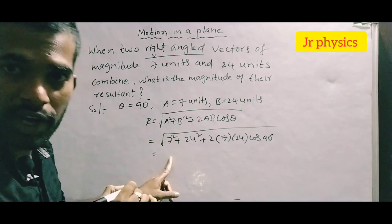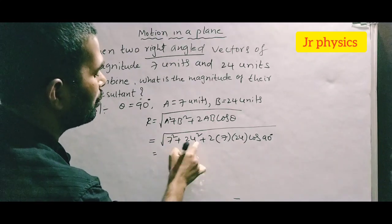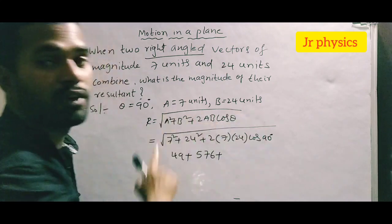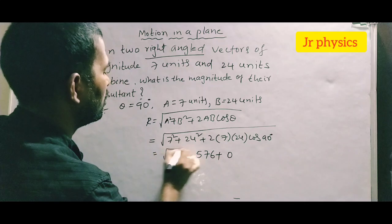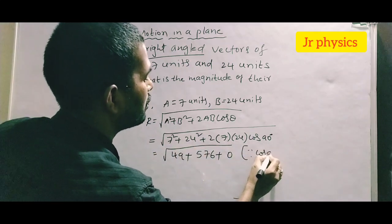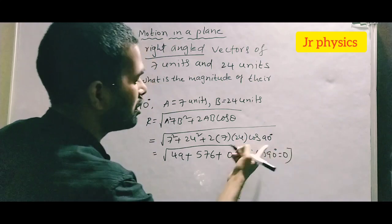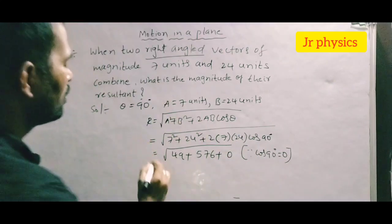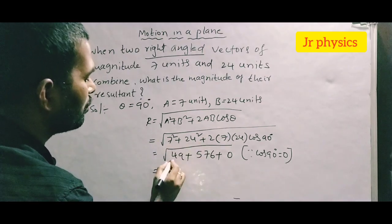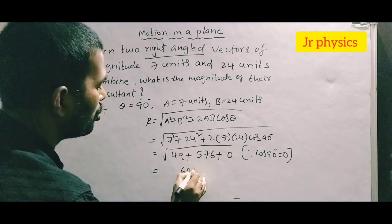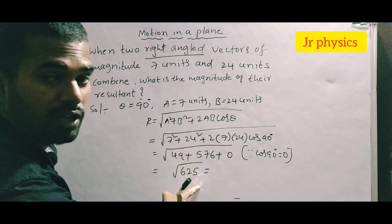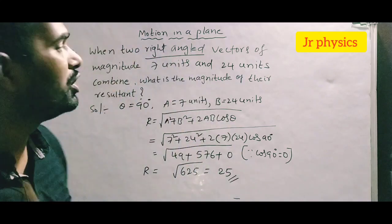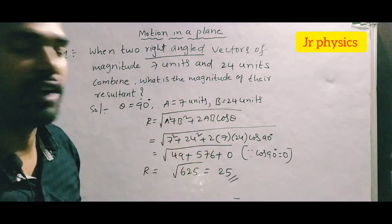7² is 49, 24² is 576, and 2 × 7 × 24 × cos90° equals 0, since cos 90° = 0. So we get √(49 + 576) = √625 = 25. The resultant of vectors A and B is 25 units.